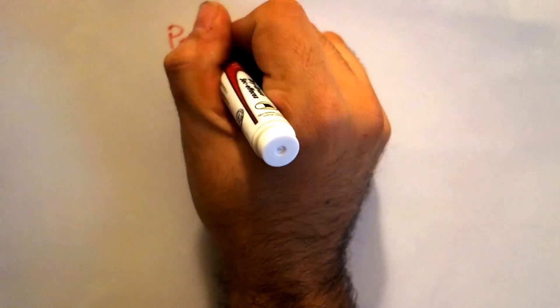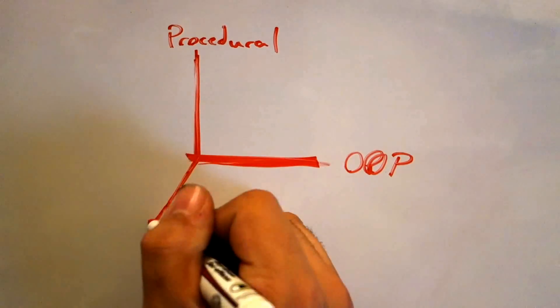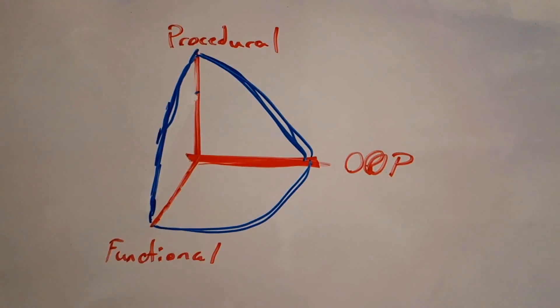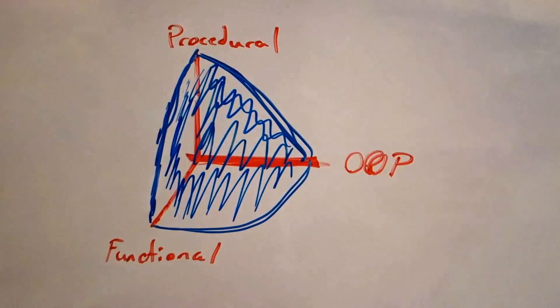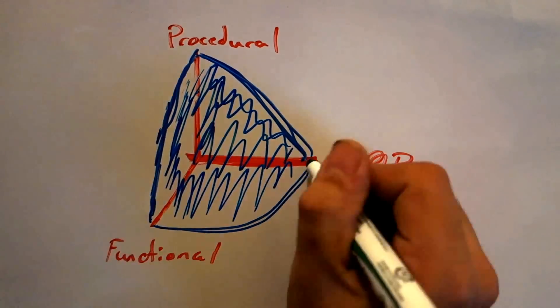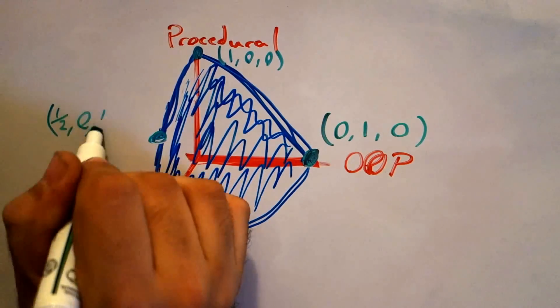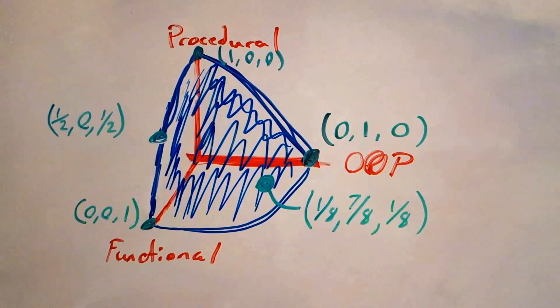Instead, what if we treat the three paradigms as axes? We would wind up with this one eighth of a sphere, taking only the regions where each paradigm would have a positive value. All non-trivial portions of code will fall somewhere upon this surface.